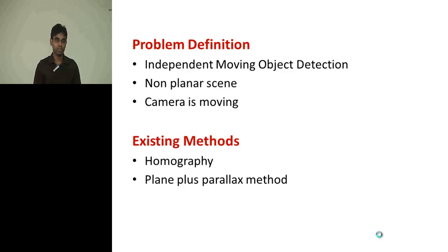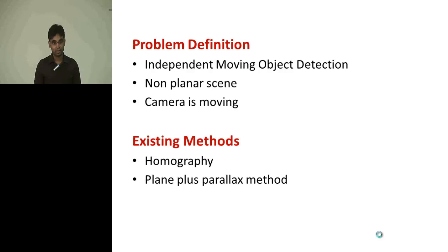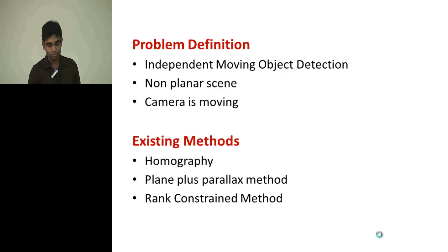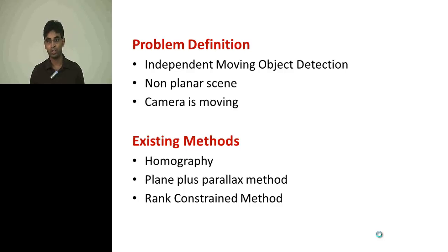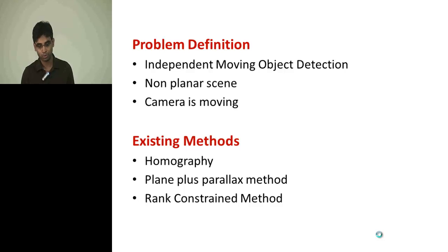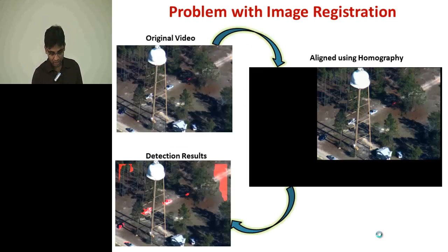Homography-based and plane-plus-parallax methods assume there is a planar scene and register each frame of the video with respect to the first. But there are problems whenever this assumption is violated. There are also some recent works using rank constraint methods, where the authors showed that static points can be represented as a low-rank matrix, while moving points do not satisfy this condition, allowing segmentation of static from moving points.